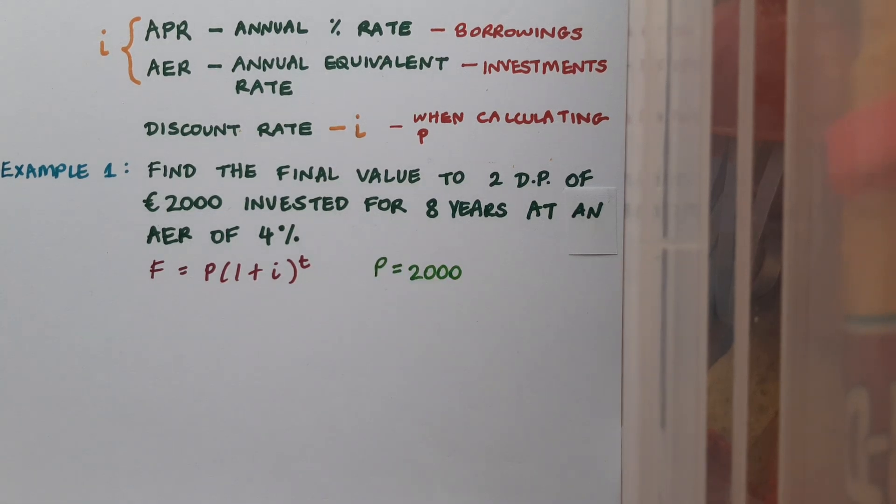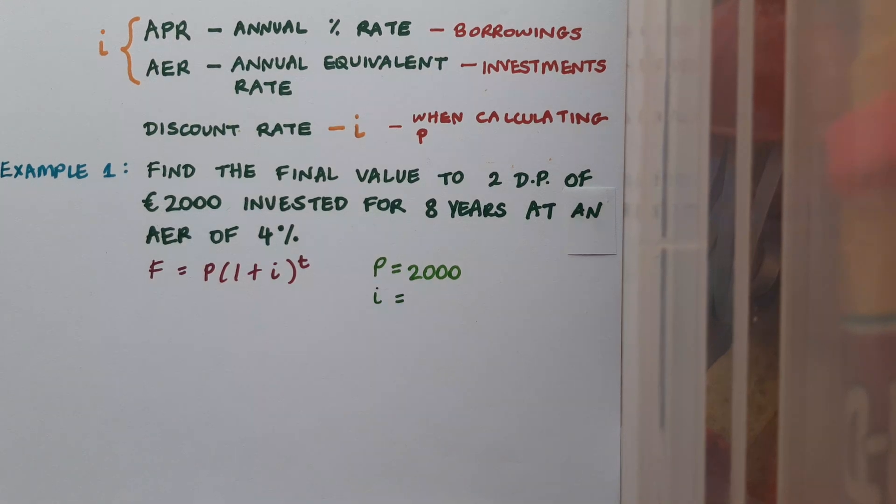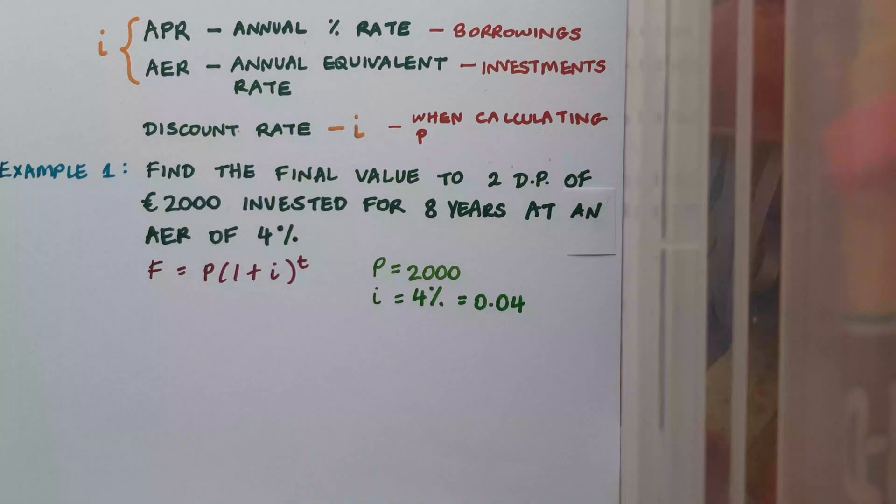Before I begin to calculate I'm going to make a note of the pieces of information that I know. P, the principal, is 2000. If I think of myself sitting at the beginning of this eight-year period then I can also think of this as being the present value. It's what it's worth now. I, the interest, is 4% but I must write this as a decimal, so that's 0.04, and t in this case is eight years.